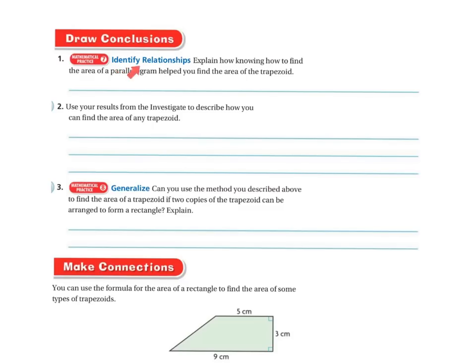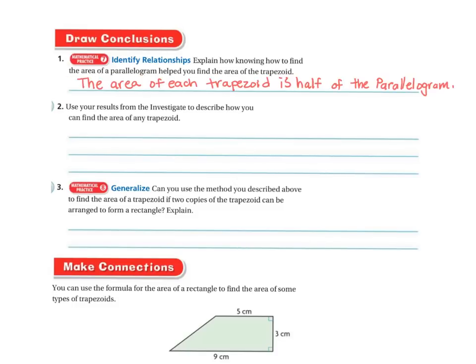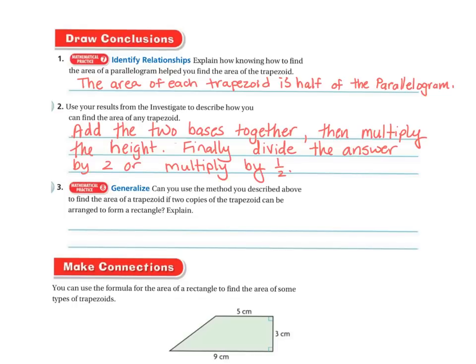Drawing conclusions — identify relationships. Explain how knowing how to find the area of a parallelogram helped you find the area of a trapezoid. Just like a triangle, the area of each trapezoid is half of the parallelogram. To find the area of any trapezoid, add the two bases together — the top one and the bottom one — multiply by the height, and then divide the answer by 2, or multiply by one half.